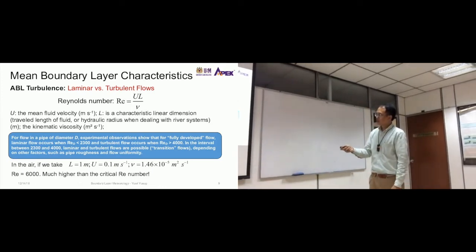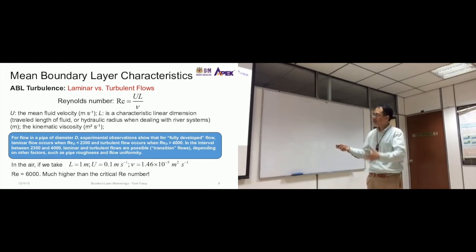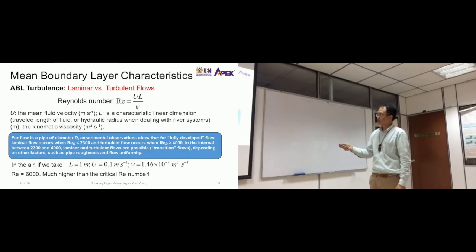For a fully developed flow, after the flow has already been developed, laminar flow occurs when the Reynolds number is less than 2300, and it starts to become turbulent when the velocity increases, more than 4000. So in the interval between 2300 and 4000, laminar and turbulent flows are possible - the transitional flows - depending on other factors such as pipe roughness and flow uniformity.